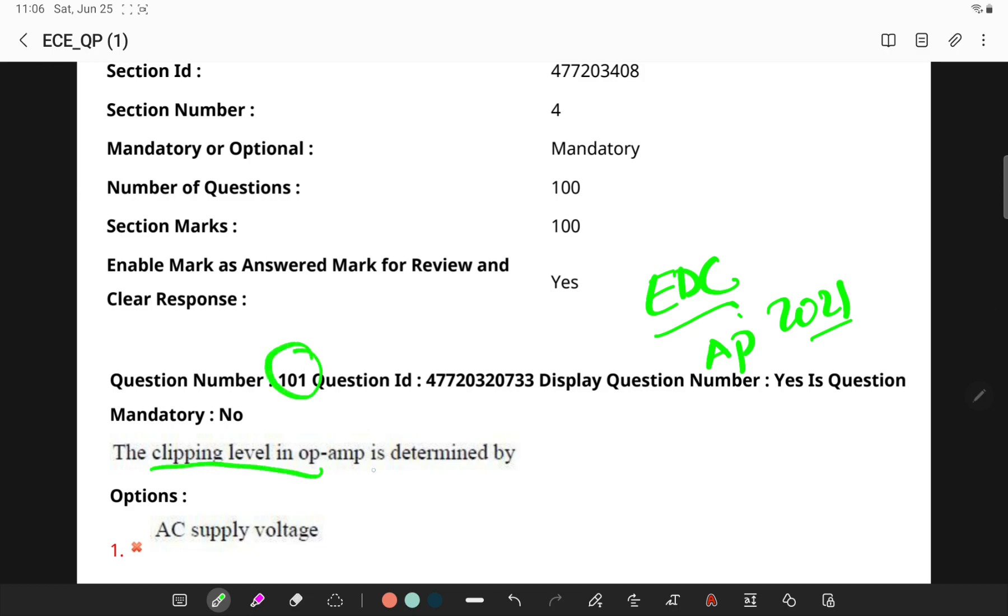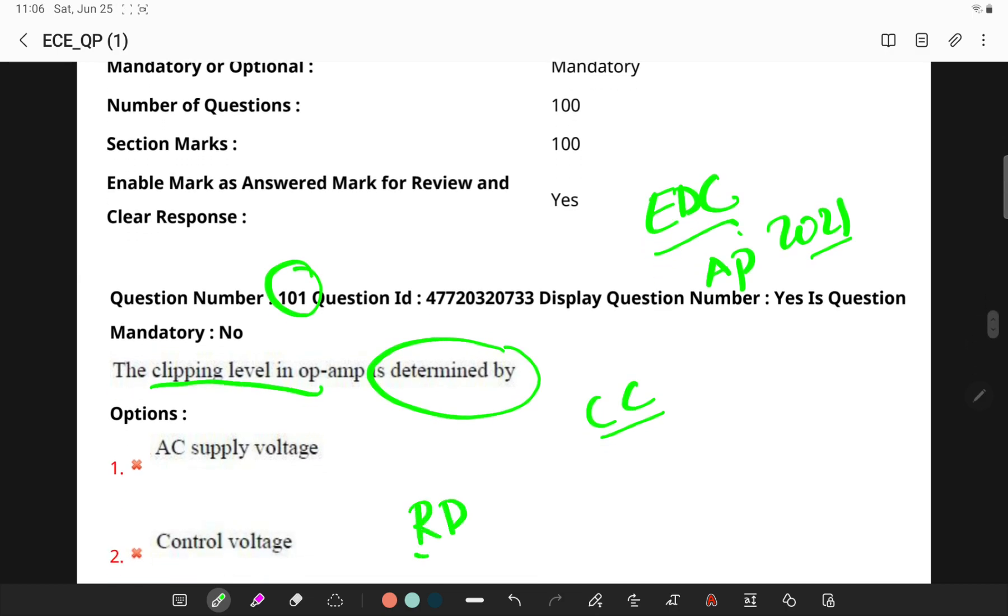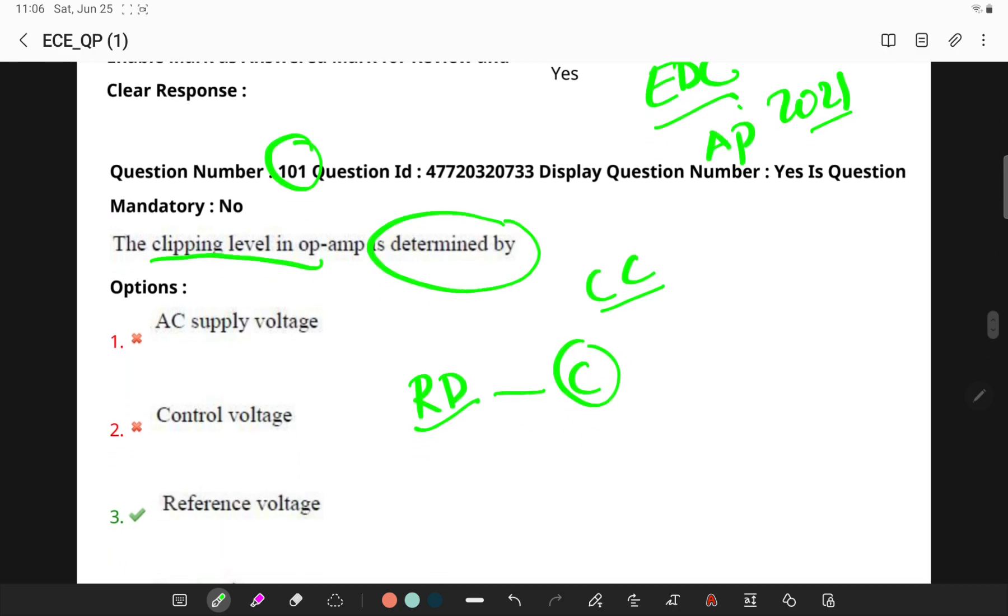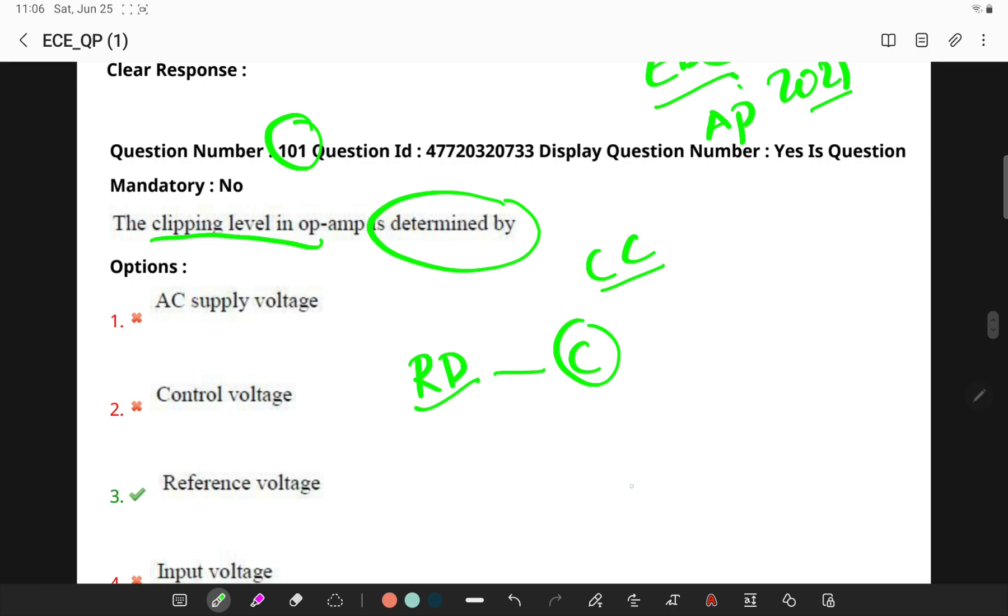The clipping level in an op-amp is determined by - remember in op-amp clipper circuits, a rectifier diode is used to clip off certain portions of the input signal to obtain a desired output. This clipping level is determined by a reference voltage which should be lesser than the input voltage range of an op-amp.